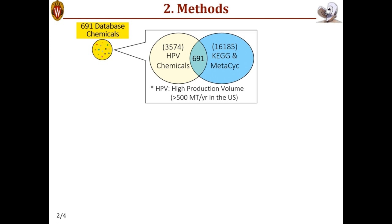More specifically, we start from 691 database chemicals, which is the intersection between HPV or high production volume chemicals, which include all commodity chemicals and a portion of fine chemicals. We intersect this with the biochemical databases like KEGG and MetaCyc, where all chemicals that exist in any biological systems are collected. And the intersection here is 691.